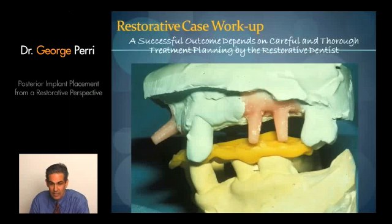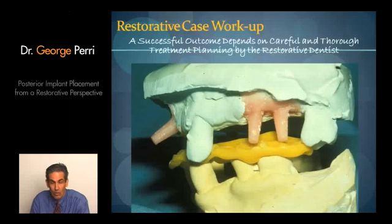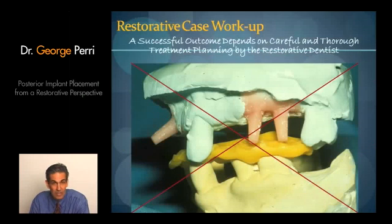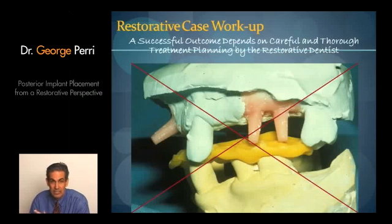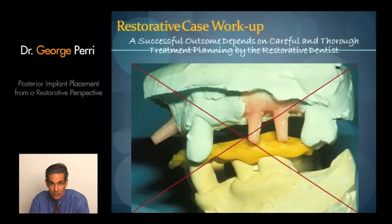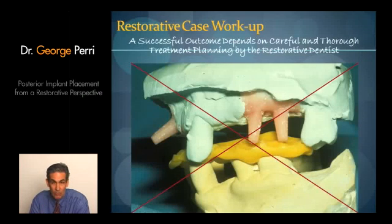A successful outcome depends on careful and thorough treatment planning, usually by the restorative dentist. We need to be able to tell the surgeon where we need the implants to be to achieve the result for that individual patient. Placing the implants surgically where the bone is and then hoping we can achieve a successful result is something we hopefully stopped doing ten years ago. The first key to successful restorative implant dentistry is determining the desired restoration for the patient, evaluating the aesthetic needs, the functional needs, and then creating the implant placement within that range of acceptability.